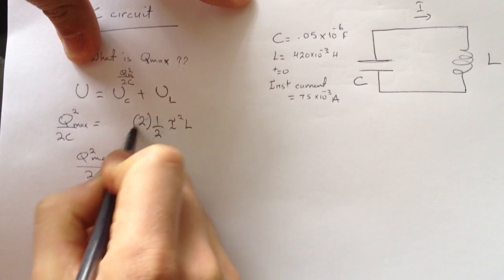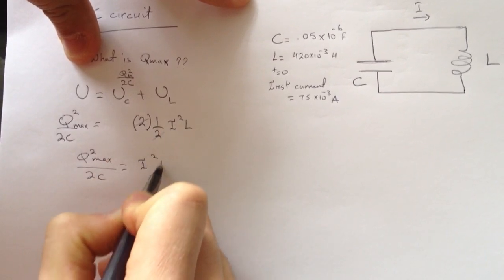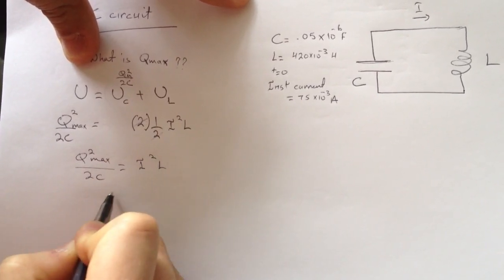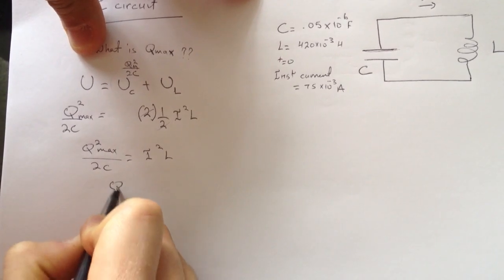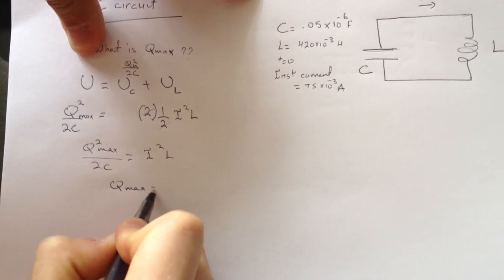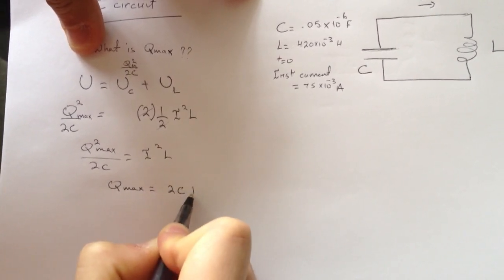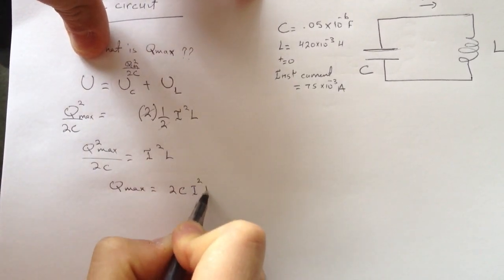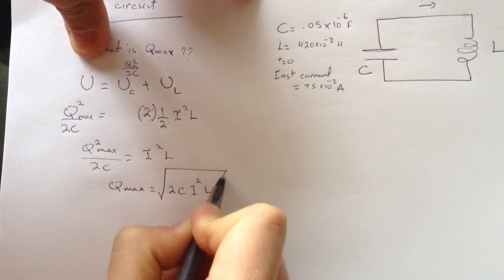So Q max over 2C equals I squared L. Take the 2C and multiply it by the other side. Q max equals 2C I squared L and take the square root of that.